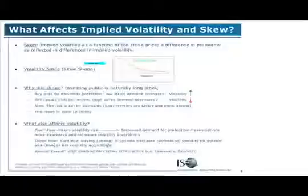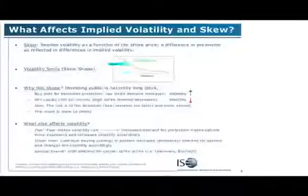In most stocks, the downside movement is much faster than upside movement, so the premium for the downside protection is always higher. For options like in the VIX or in commodities, this smile will be all the way around because the upside risk is higher.